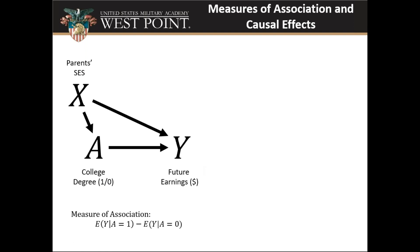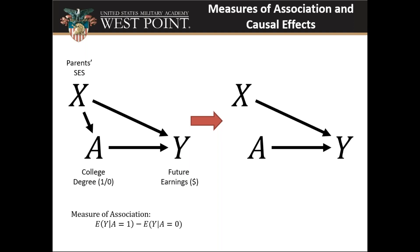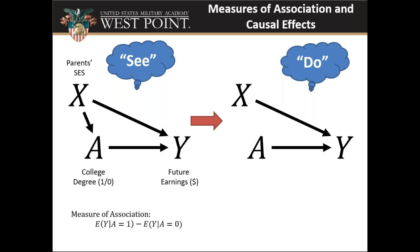Students from higher socioeconomic status are more likely to attend college and, regardless of whether they attended, are likely to have higher future earnings. Very frequently, what we want to do is take observational data and estimate what the effect would be in a world where I intervened and changed somebody's college attendance — in other words, measuring a causal effect. We can't express causal effects purely in standard conditional probability notation, and one of the first things done in this field, 30 or 40 years ago, was to develop notation for causal effects.